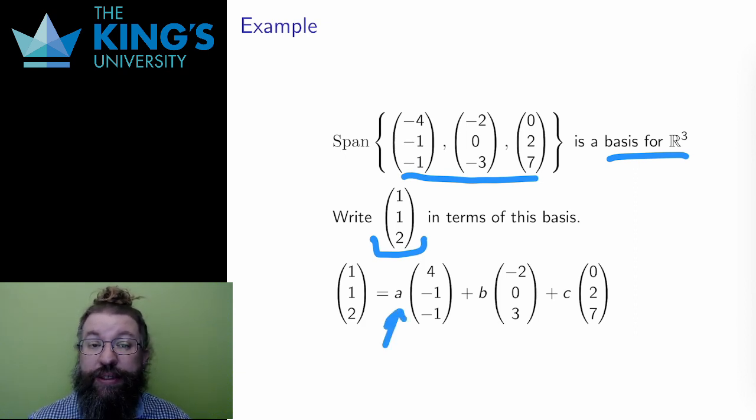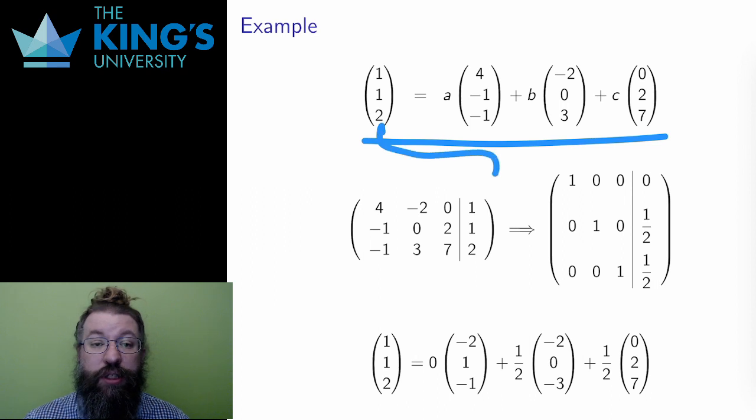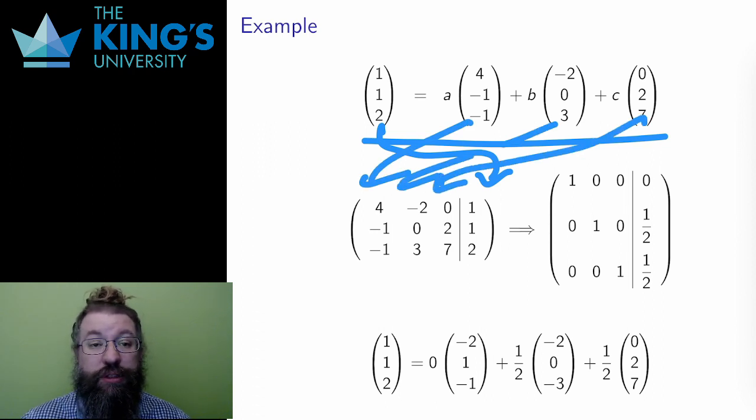I want to find numbers A, B, and C to make this equation true. And I follow the procedure from the last example. I make an extended matrix, with the new vector as the vector of constants, and the three basis vectors as the vectors on the left of the separation. Then I row reduce. I get a unique solution, as I expected. And I read off the coefficients.